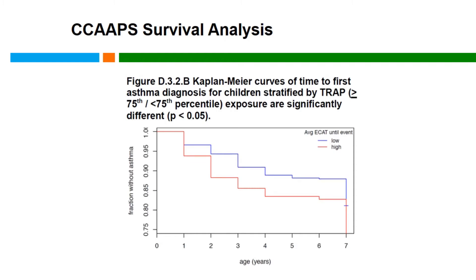Here's a Kaplan-Meier curve presenting the cumulative probabilities of survival — in this case, time to asthma diagnosis for the CAPS cohort. The blue curve represents the cumulative probabilities of survival, where survival means not having been diagnosed with asthma, among children exposed to low levels of air pollution at birth. The red curve represents children exposed to high levels of air pollution at birth. Not only are children exposed to high levels more likely to develop asthma, but the time to asthma onset is shorter among those with high levels of air pollution exposure at birth.